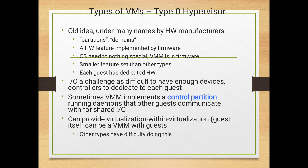In the Type 0 hypervisor virtual machine type, it is an old idea known under many names by hardware manufacturers. The IO challenge is difficult because there are not enough device controllers to dedicate to each guest. Sometimes a virtual machine implements a control partition running demands that other guests communicate with for shared IO. Type 0 can also provide virtualization within virtualization, where the guest itself can be a virtual machine.